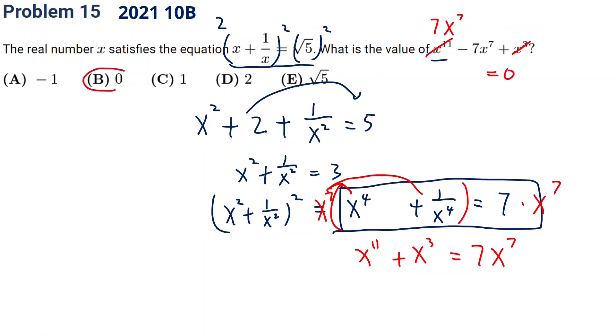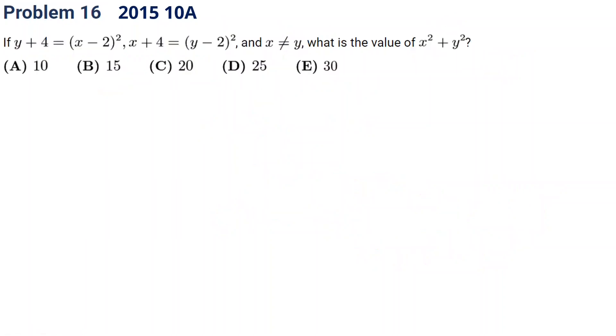So x to the 11th minus 7 times x to the seventh plus x cubed equals 0. This one is a bit amazing — just a bit of calculating and we find the answer.